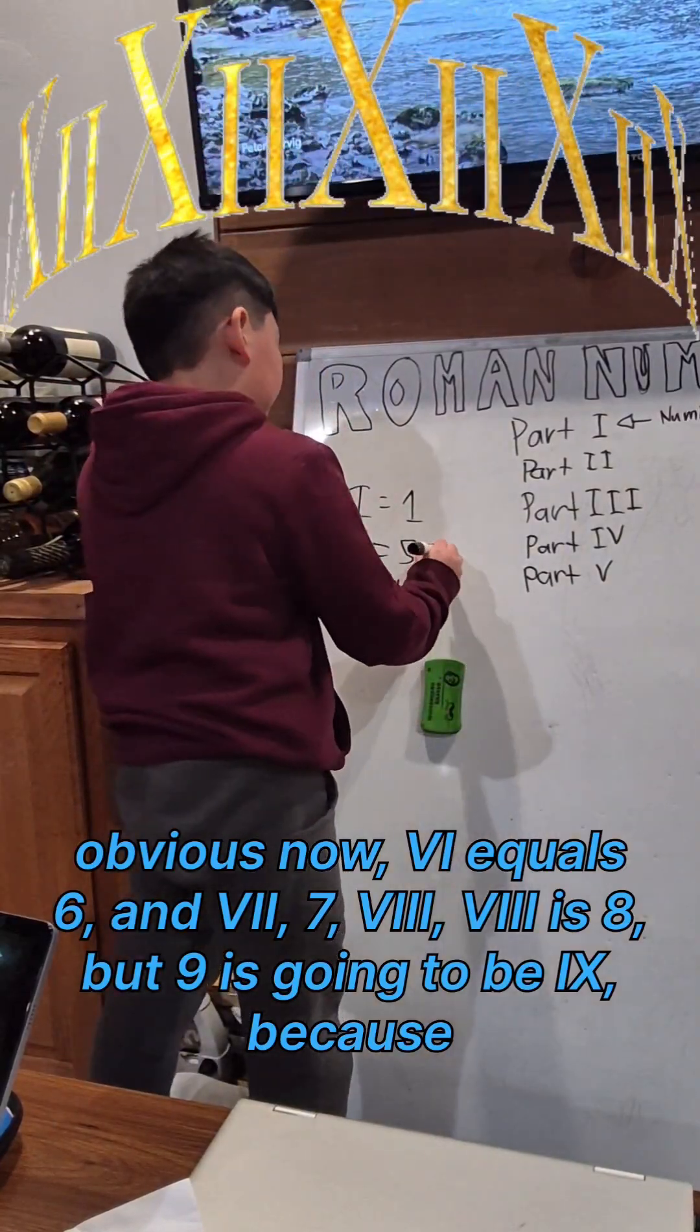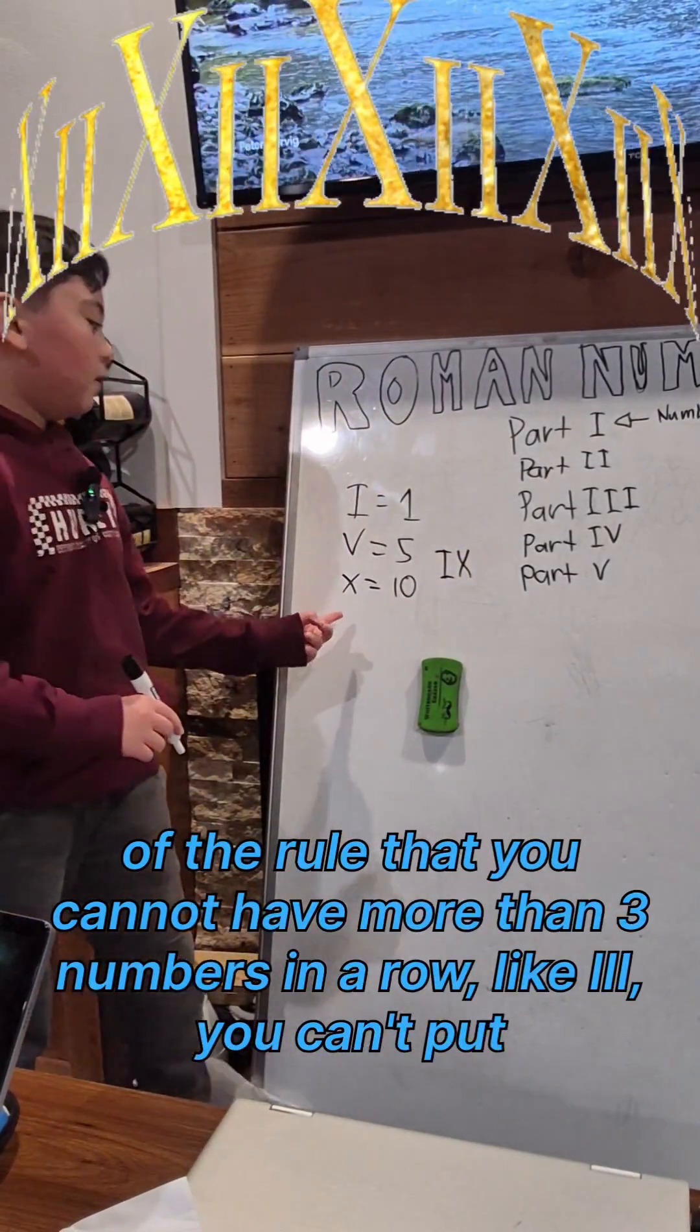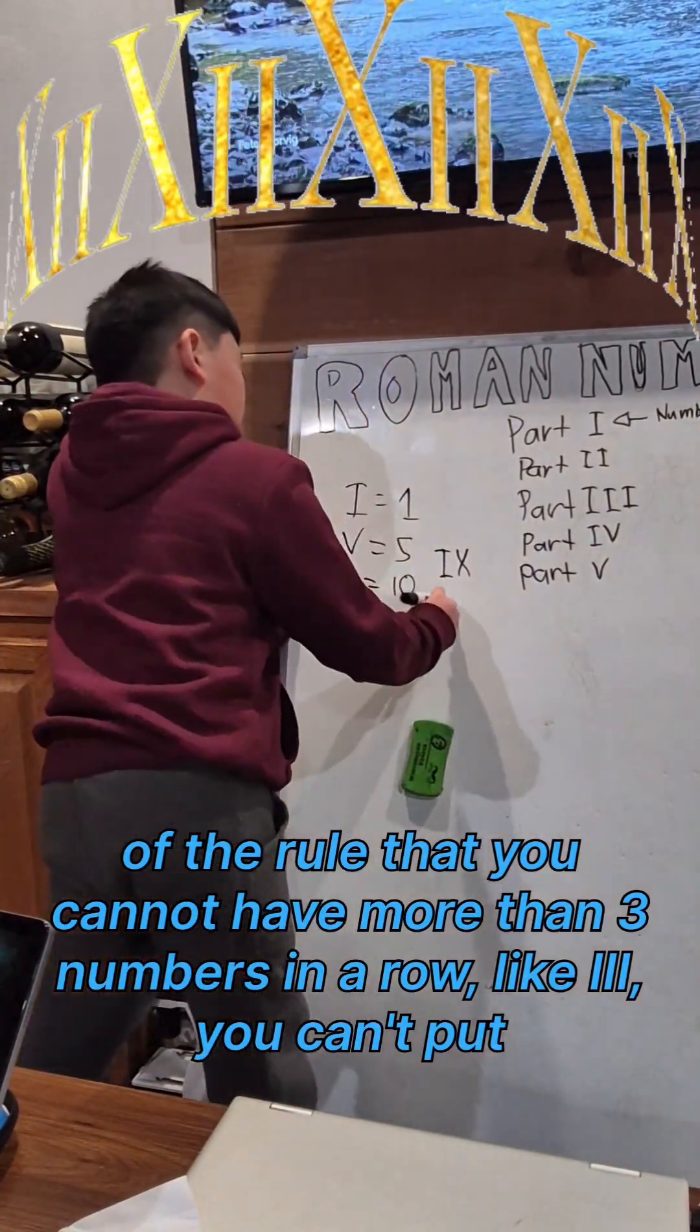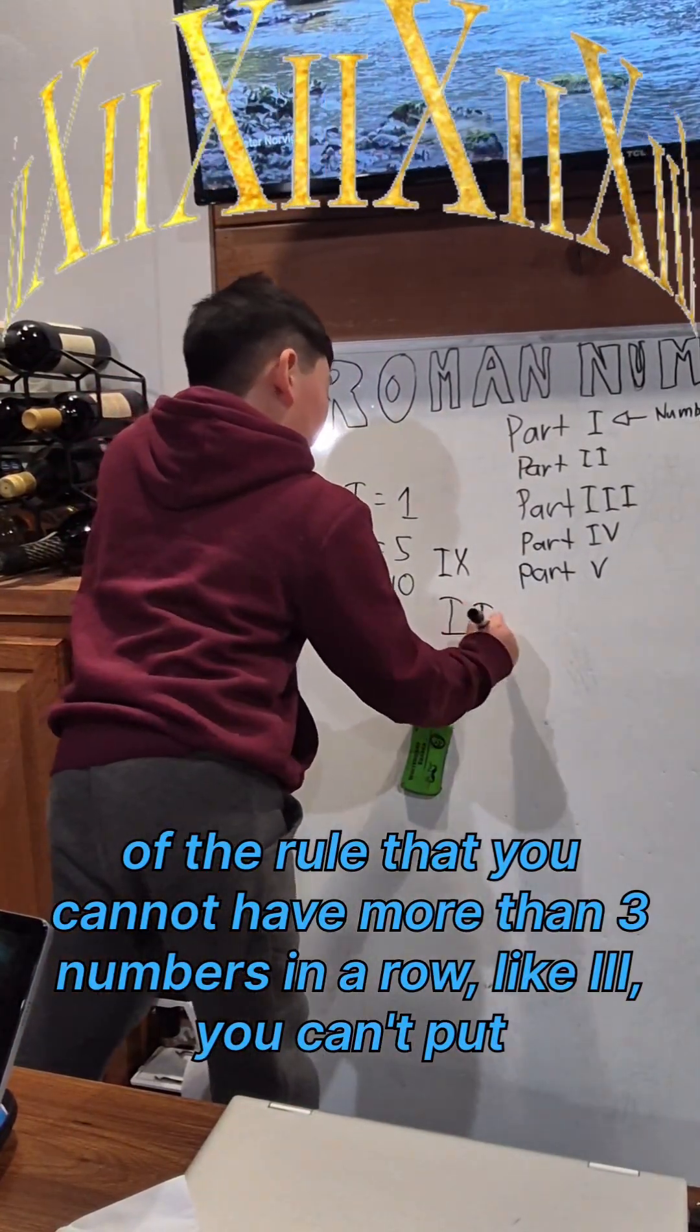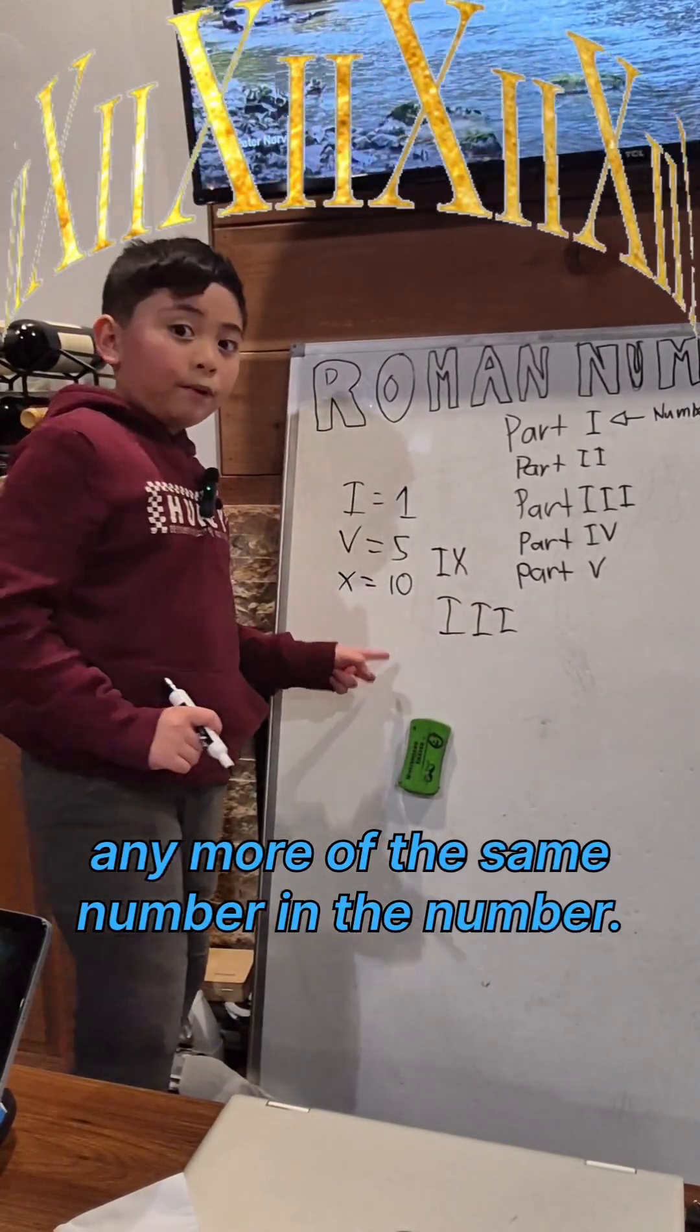Because of the rule that you cannot have more than three numbers in a row, like III, you can't put any more of the same number in the number.